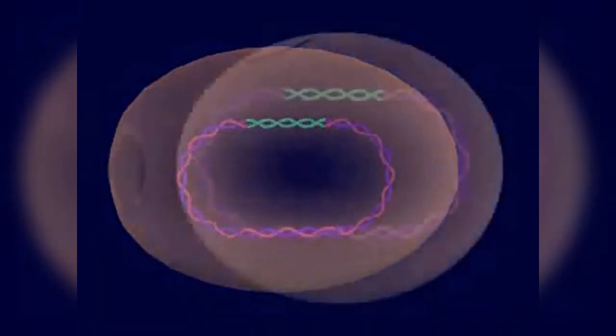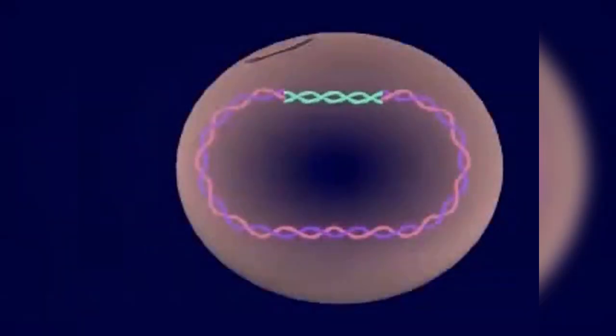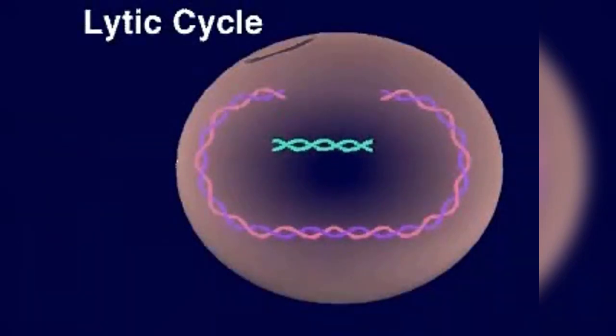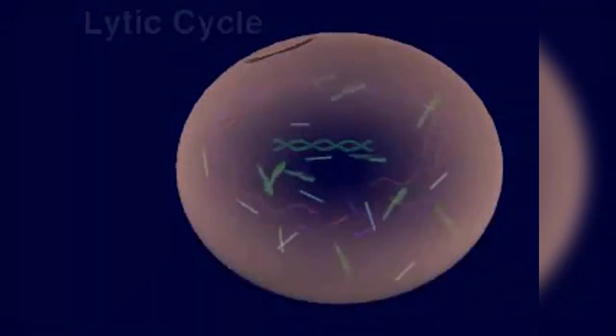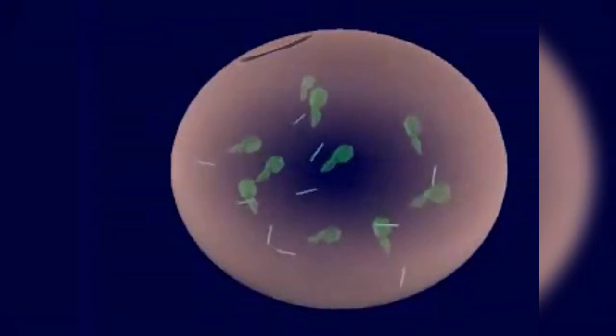At any time, a provirus may leave the host chromosome and enter a lytic cycle. When this happens, the host cell's DNA is broken down and new virus parts are produced and assembled.